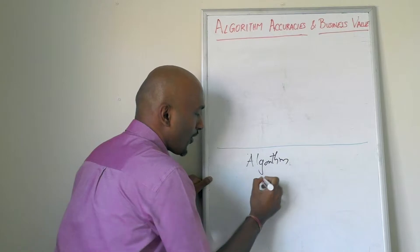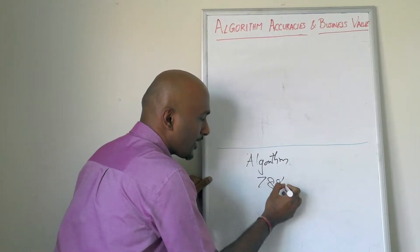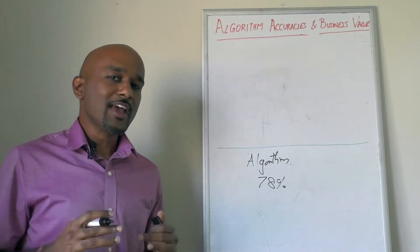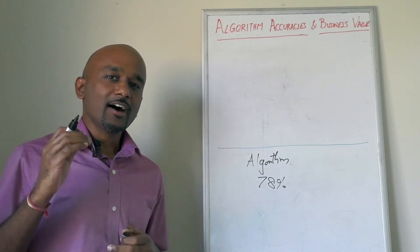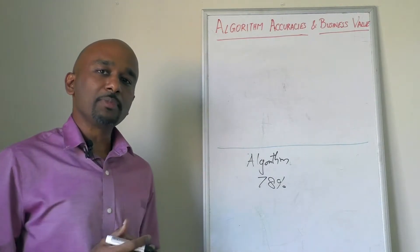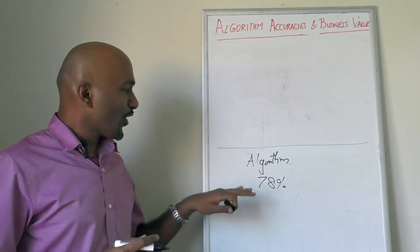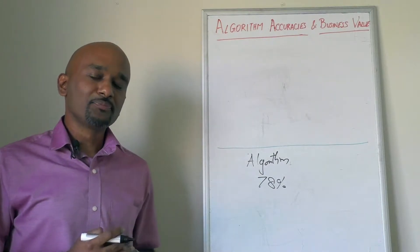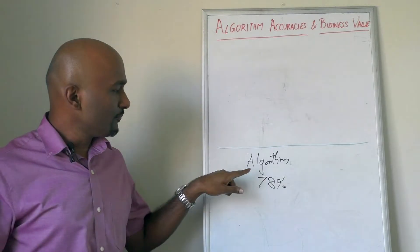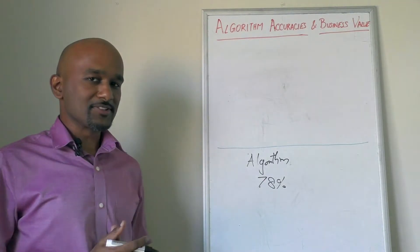There are questions on whether the model can be any better. Why does it make so many mistakes when we have AI around us? Are the model building process, the skill level of people, is it good enough? So all of these are conversations which get sparked. There should be four questions you should instead ask before you worry about the 78%.